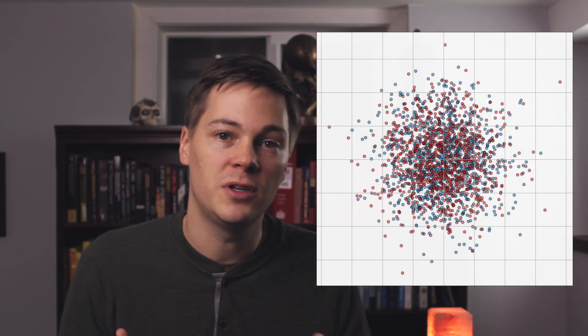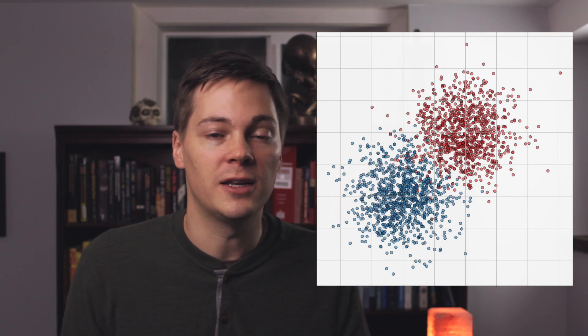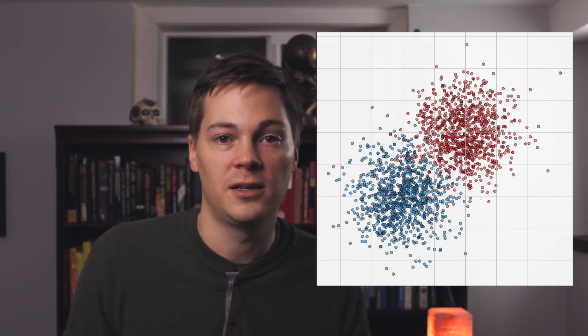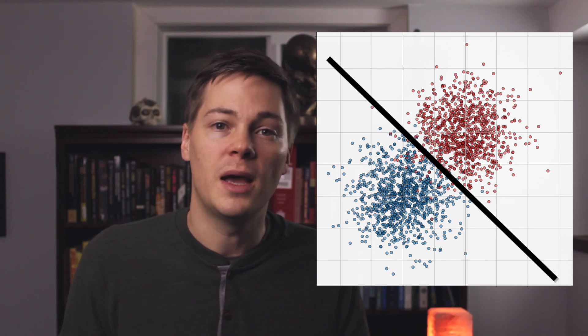Adversarial validation is when you learn a model to try to predict which samples came from the training set and which samples came from the test set. If these two datasets came from the same distribution and occupied the same parts of the feature space, then this should be impossible. But if there are systematic differences between the training and test dataset, then you're likely able to learn a model to distinguish among them. And the better the model you can build for making this determination, the bigger the violation you have of the assumption that your data is identically distributed.